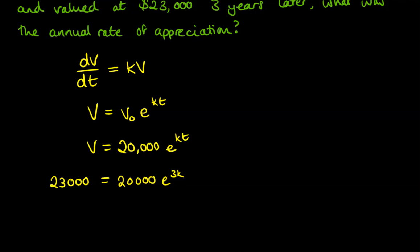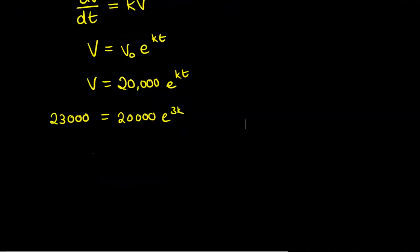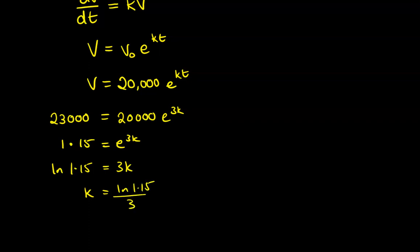And from here we can go through and work out the value of k. Now I'm going to go through and solve it algebraically. You can pop that into your calculator equation solver as well. So if we divide both sides by 20,000, we get 1.15 equals e to the 3k. We take log of both sides to undo the e that's happening, because we're trying to get down to the k. So then k will equal the natural log of 1.15 over 3, which comes to 0.0466.